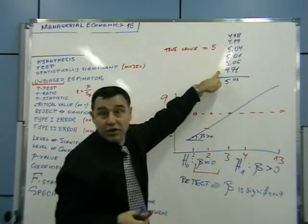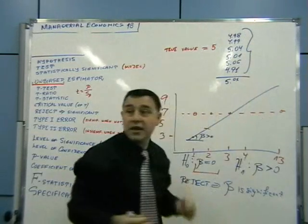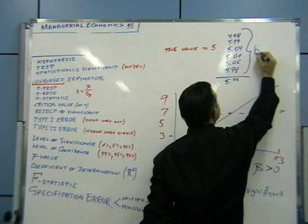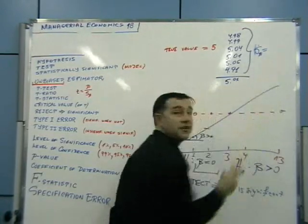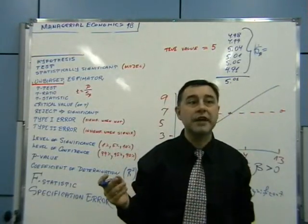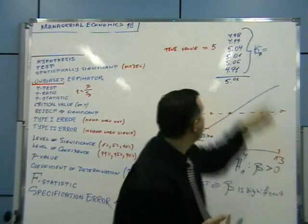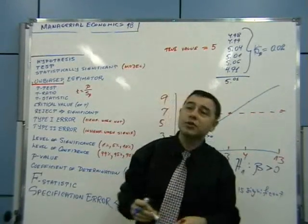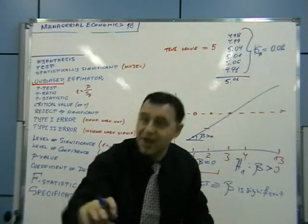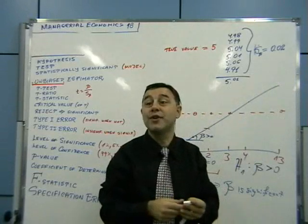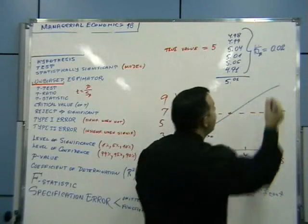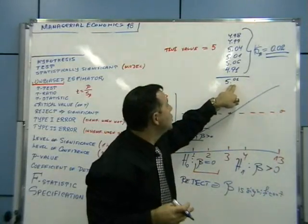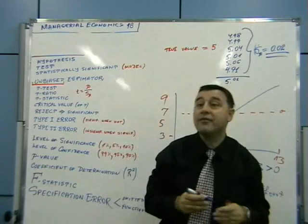The standard error — sigma of beta — looking at the numbers I gave, anyone with a calculator can compute it. By rough inspection, the standard error is about 0.02. Running six experiments with an average of 5.01, does it look like 5 is a reasonable estimate? The answer intuitively and statistically is yes.